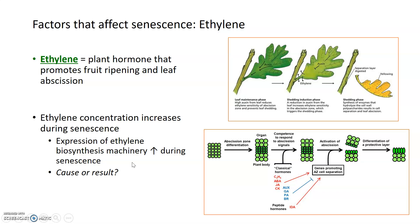We know that ethylene concentration increases during leaf senescence. But what's not clear is whether ethylene is actually the cause of leaf senescence, because there is expression of the machinery that makes ethylene — the enzymes responsible for its biosynthesis — and expression of those enzymes increases during senescence as well. But it's not clear that ethylene is the cause of senescence, or whether senescence is happening and ethylene concentration increases as a result. Studies into that are still ongoing to determine if ethylene increase is the cause of senescence or just a consequence of it.